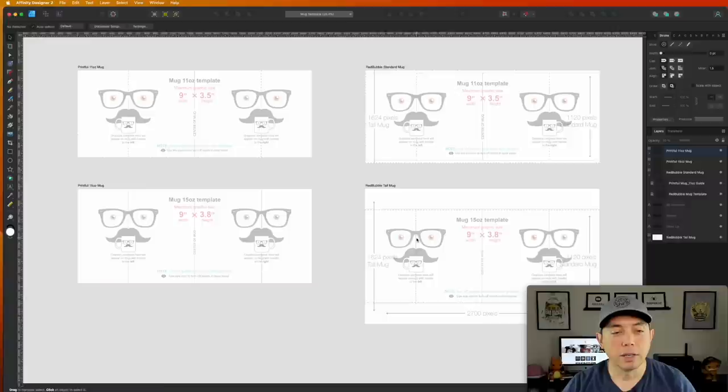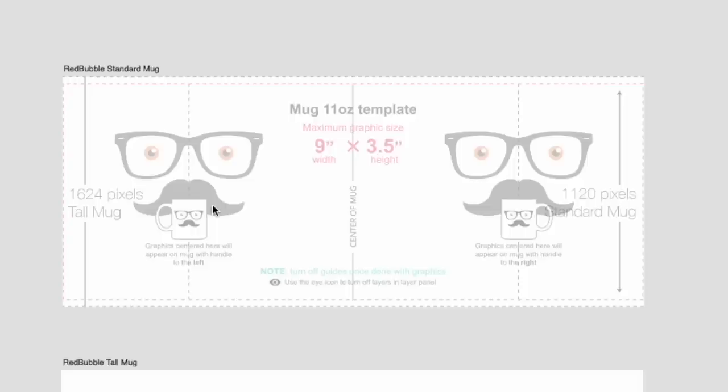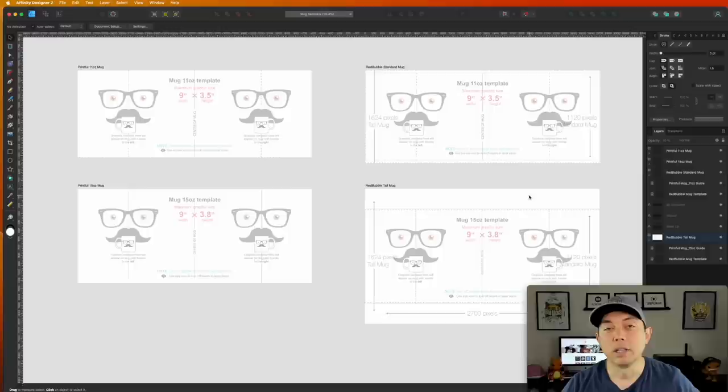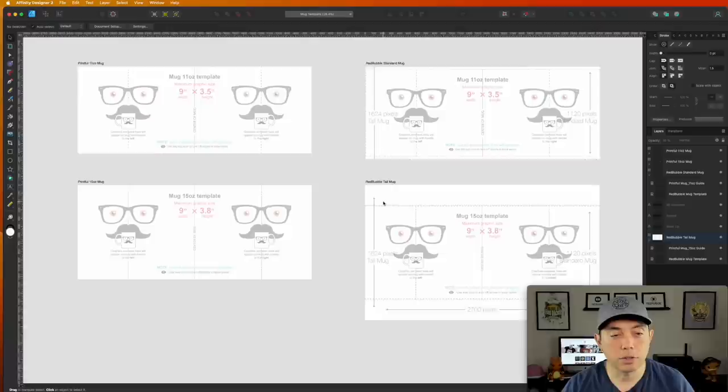What I like about this template is it shows you where the center of the mug is — both on the standard and the tall mug. That's really helpful for layout. If you want a T-shirt style design on your mug, you'd place it right on that center edge. We're going to concentrate on the tall mug first, and because the design fits the tall mug it will also work on the standard one.